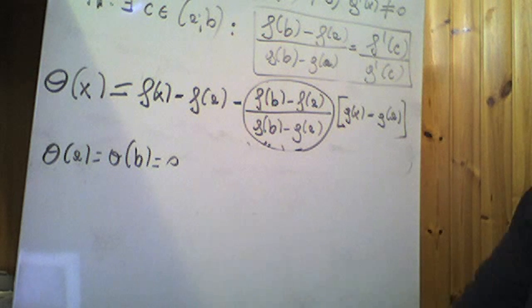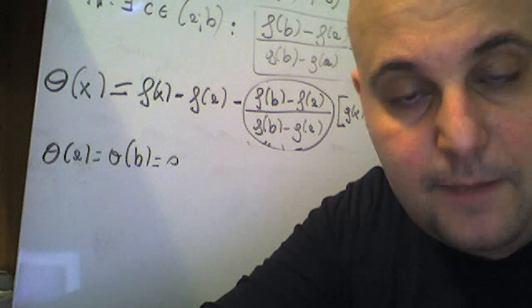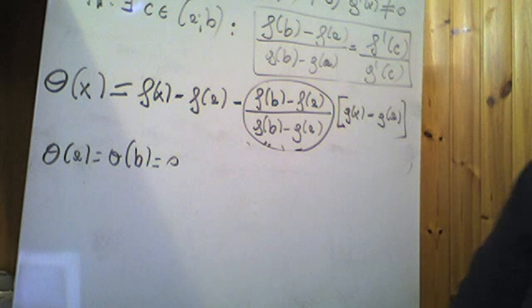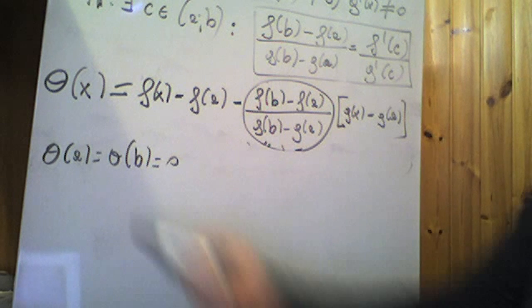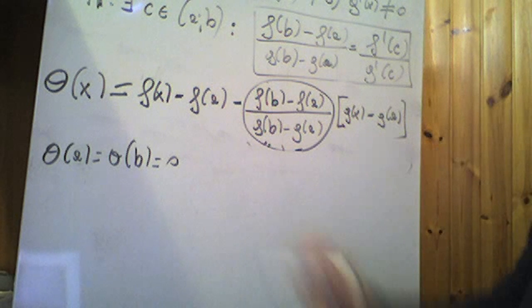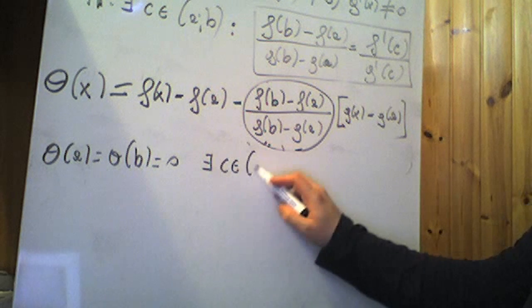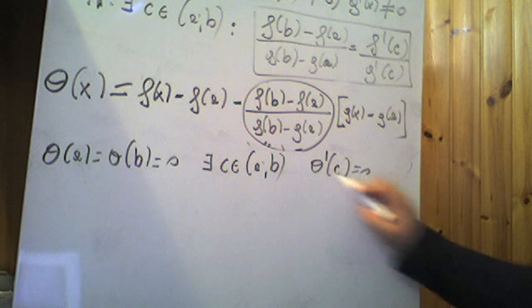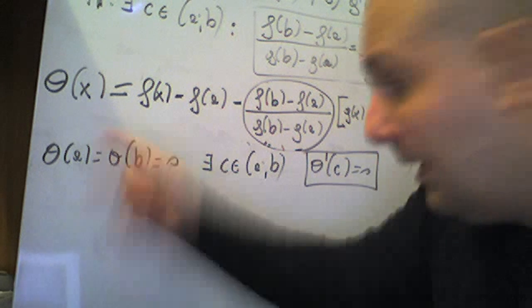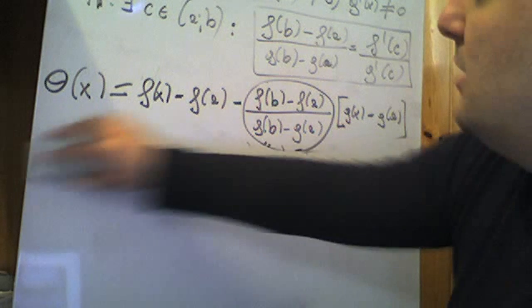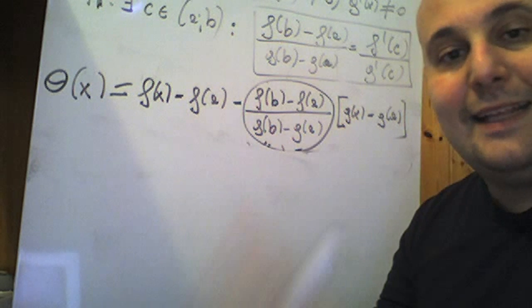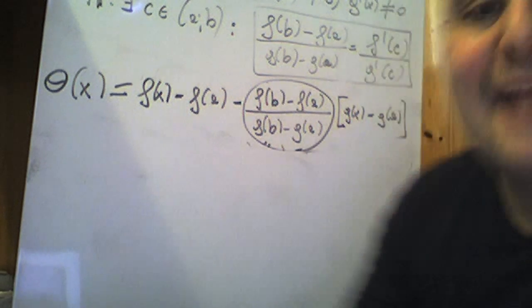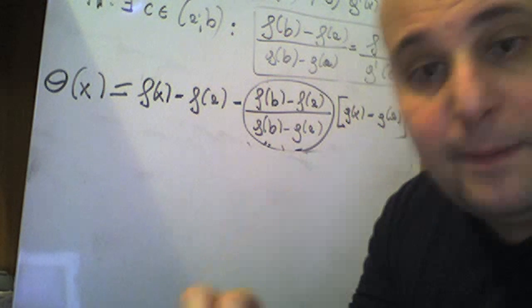Ora θ(x) è continua su [a,b] chiuso e limitato, derivabile su (a,b) aperto e limitato, e vale θ(a) = θ(b) = 0. Sono soddisfatte le ipotesi del teorema di Rolle per la funzione ausiliaria θ(x). Quindi esisterà almeno un punto c appartenente all'intervallo (a,b) aperto e limitato in cui risulta θ'(c) = 0. Calcoliamo allora la derivata prima θ'(x) della funzione ausiliaria.